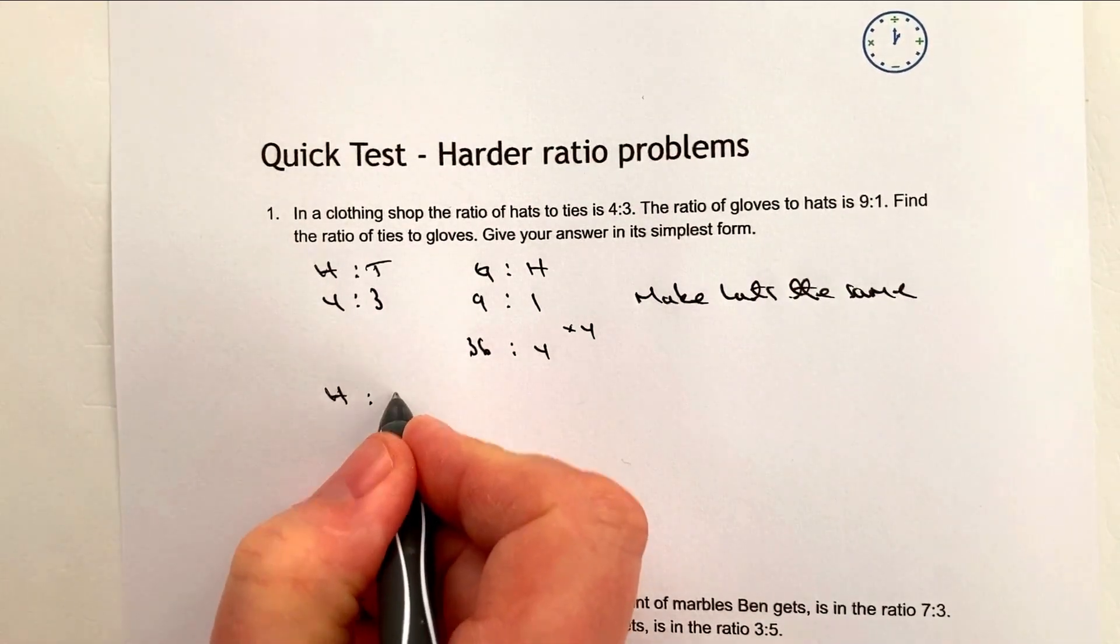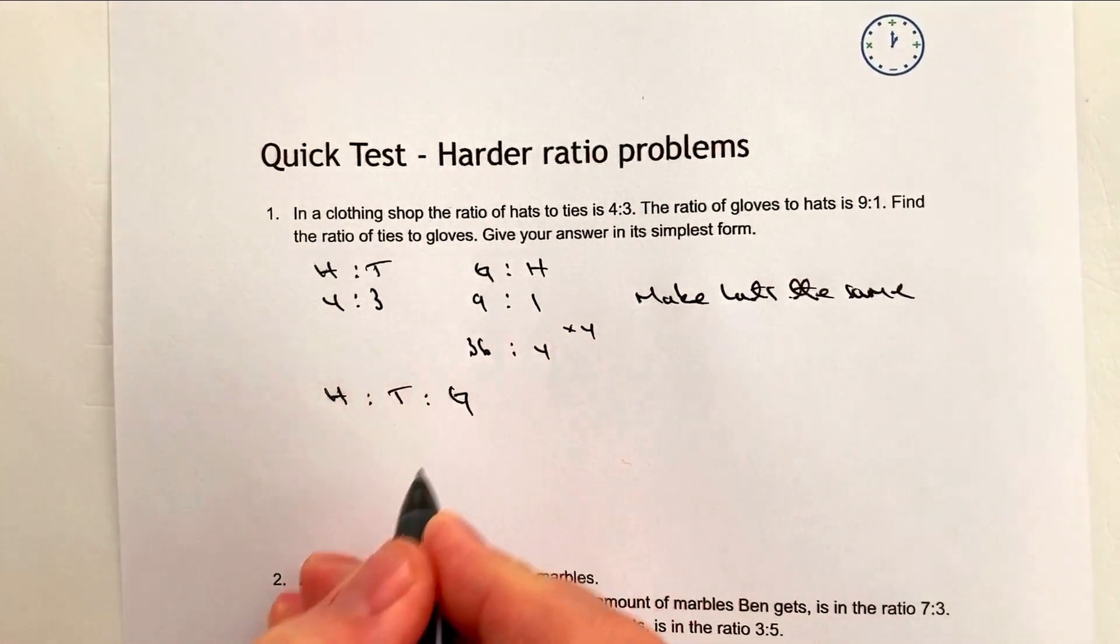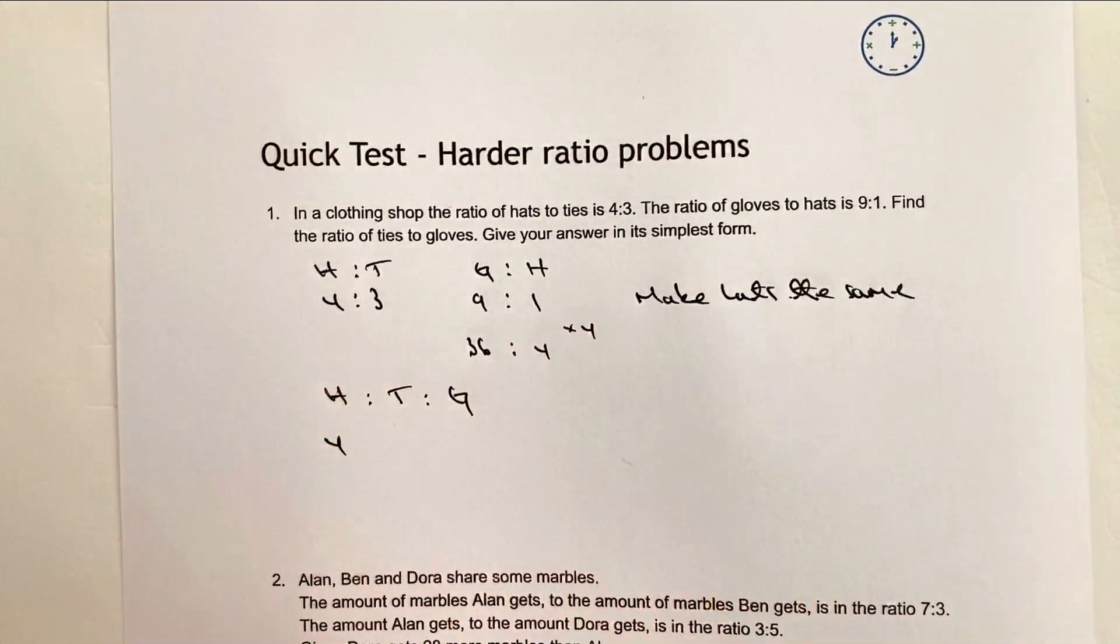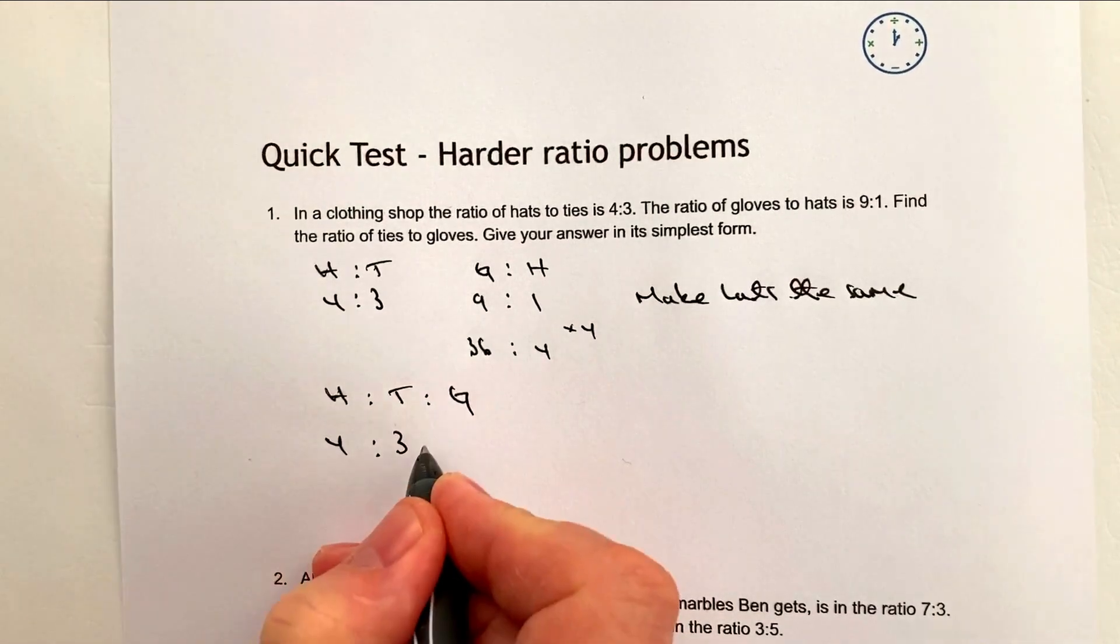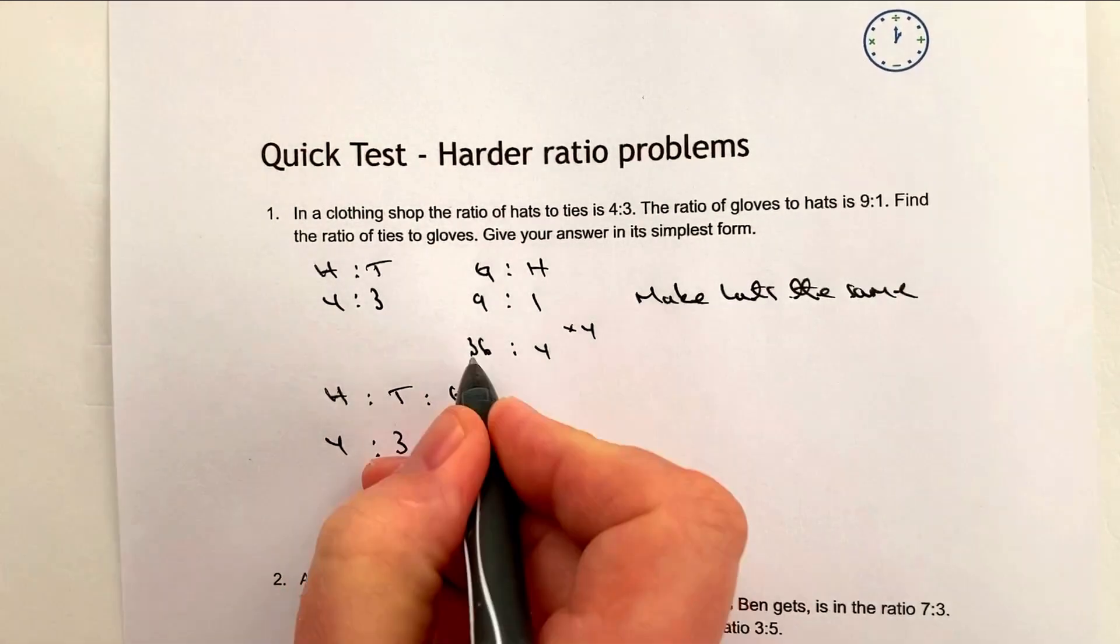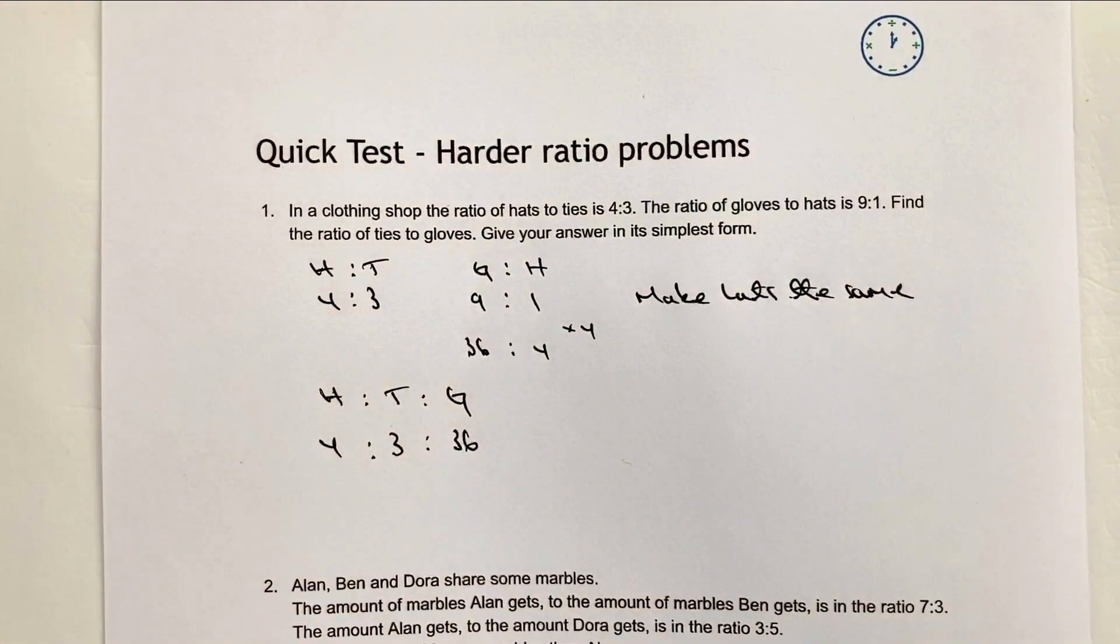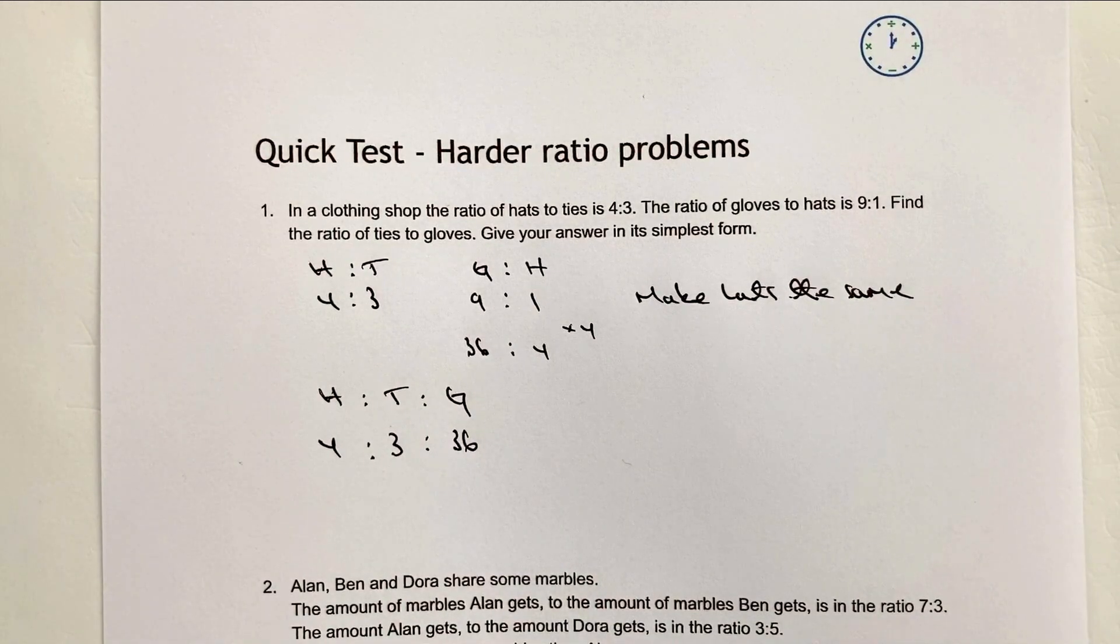So we're in a position now where we've got the same number of hats, which means we can write hats to ties to gloves. Hats is going to be 4, that's OK because we've got that. Ties, we know, is already 3 and gloves is actually 36. So it then says find the ratio of ties to gloves.